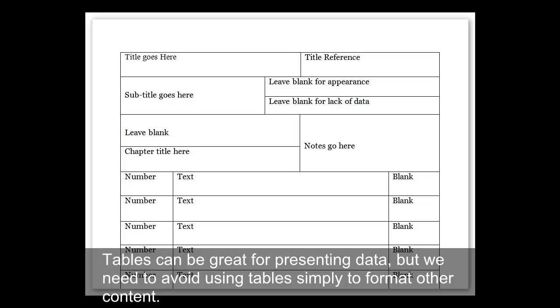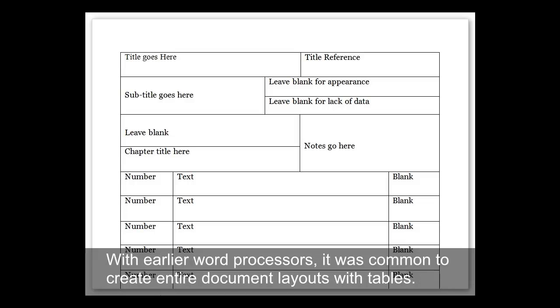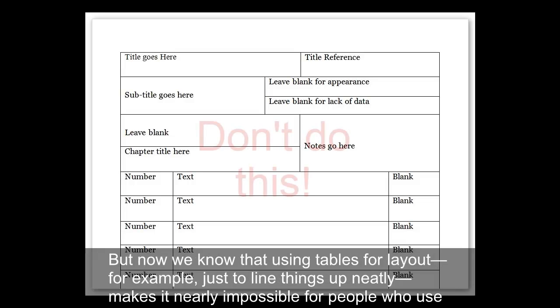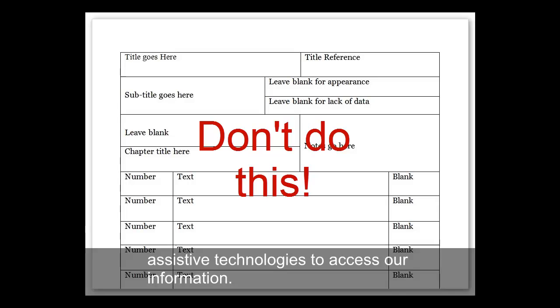Tables can be great for presenting data, but we need to avoid using tables simply to format other content. With earlier word processors, it was common to create entire document layouts with tables. But now we know that using tables for layout, for example, just to line things up neatly, makes it nearly impossible for people who use assistive technologies to access our information.